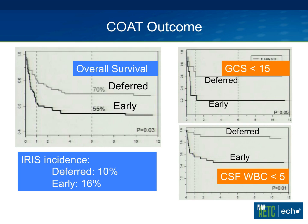The survival data showed the deferred group had 70% survival — probably better than any prior study in Africa — compared to 55% in the early ART group. In pre-specified subgroup analyses, the difference was most pronounced in patients with low Glasgow Coma Scale scores and in those without a CSF inflammatory response (using a cutoff of 5 white cells). In these subgroups, deferred therapy had a significant survival advantage with a p-value of 0.01, while no difference was seen in patients with normal mental status.